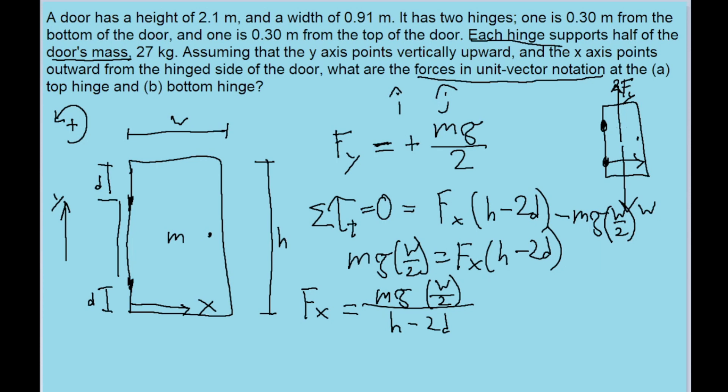Which right away tells us something. Because since there are no other horizontal forces on the door aside from the top hinge, then in order for the horizontal forces to be balanced, for the door to be in equilibrium, then the force on the top hinge must be in the opposite direction with an equal magnitude.